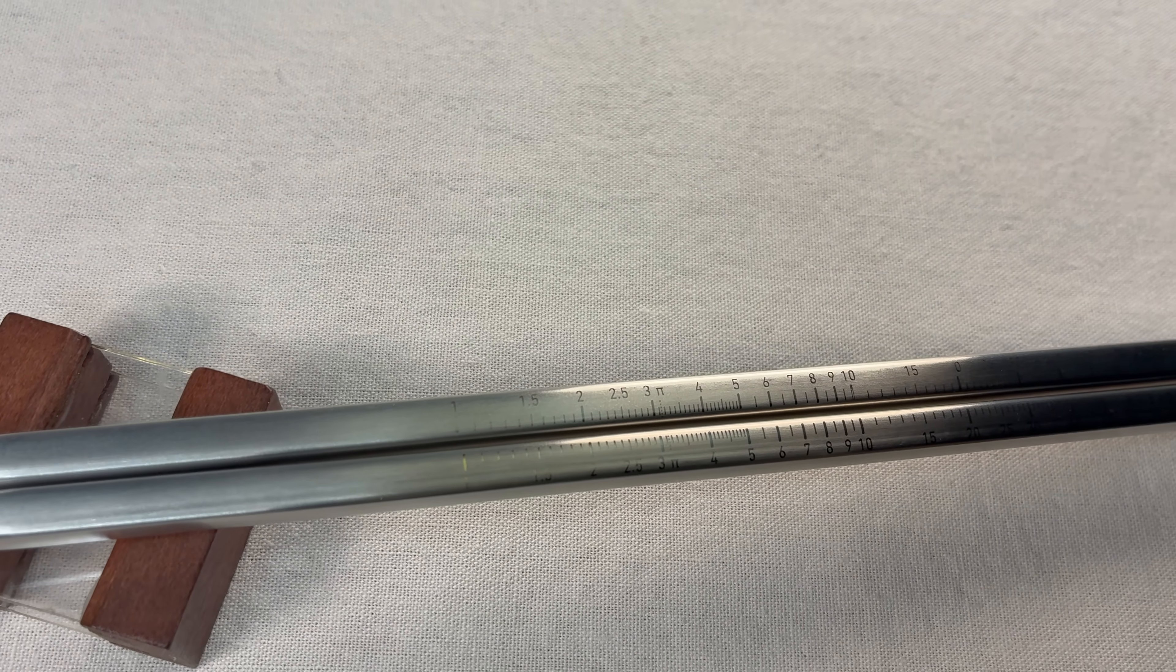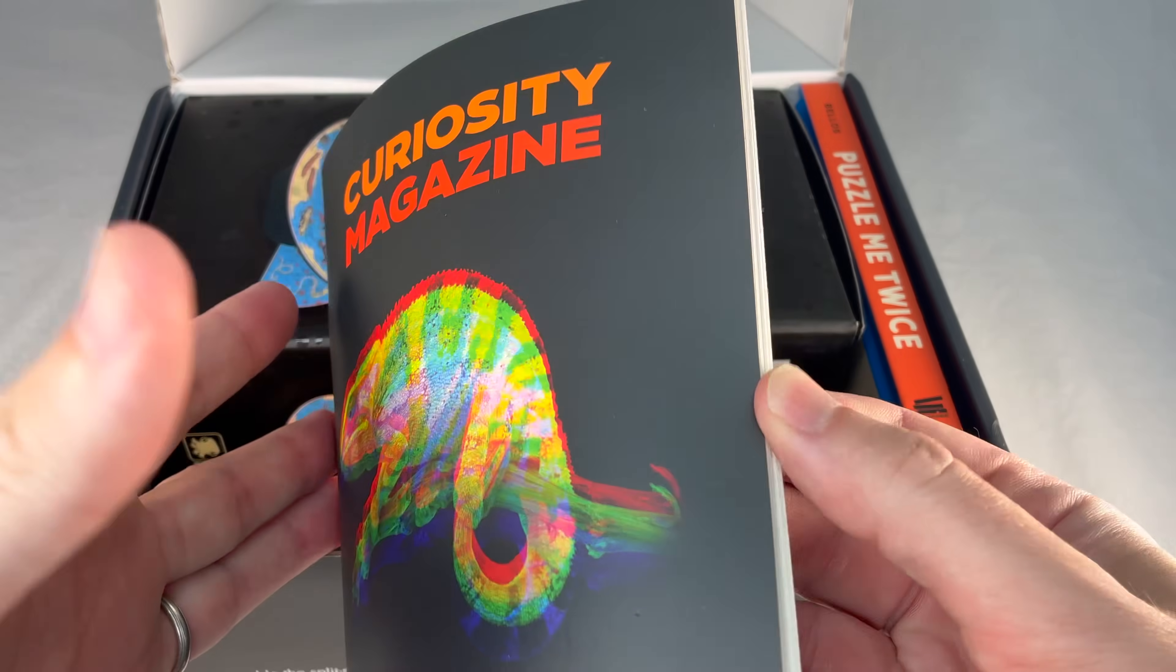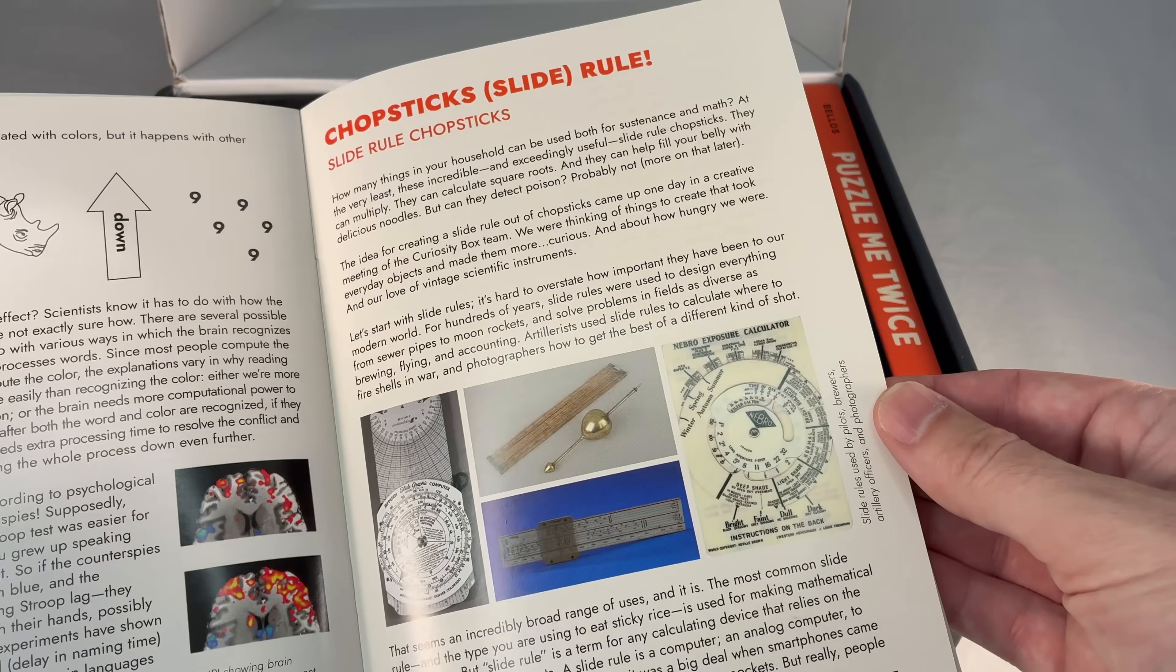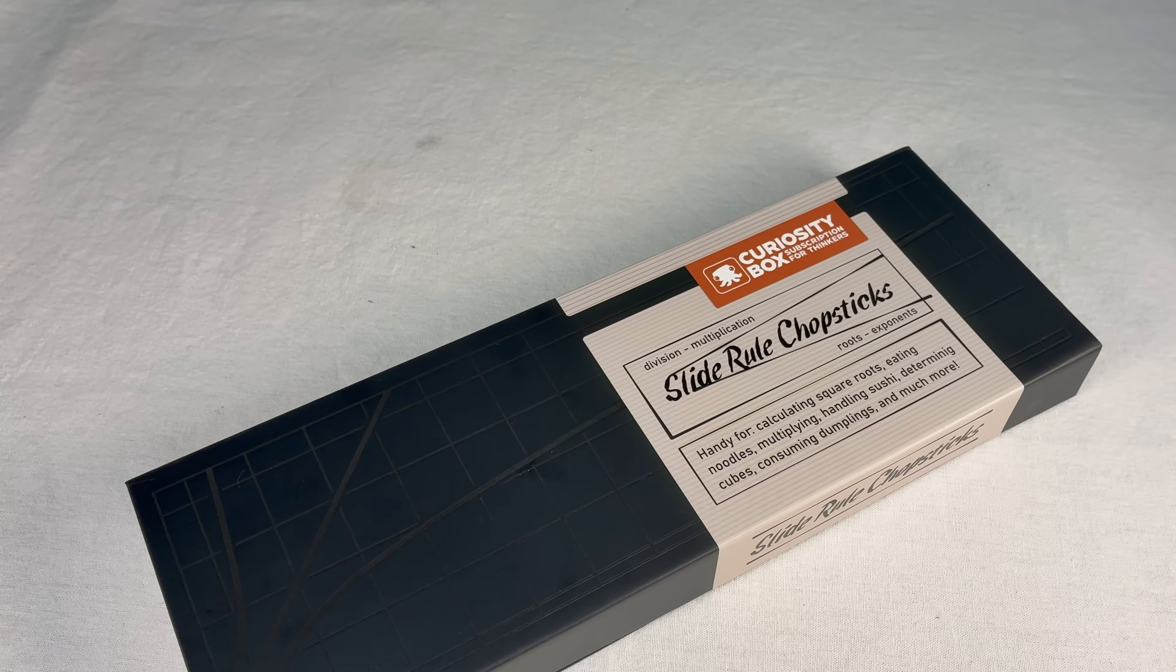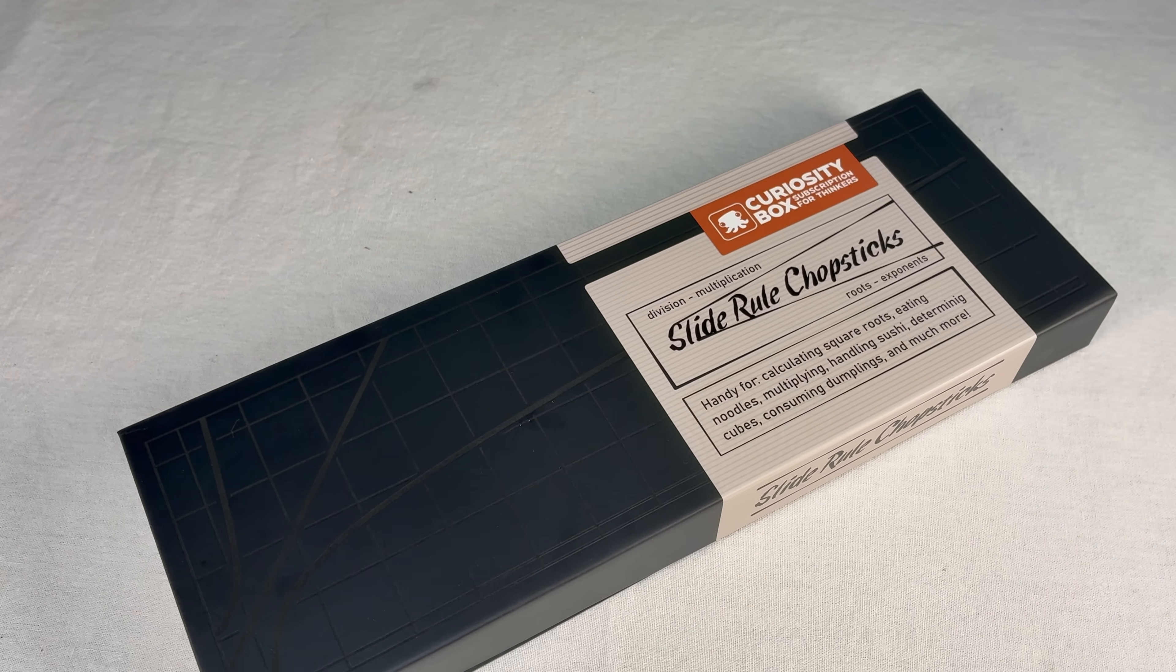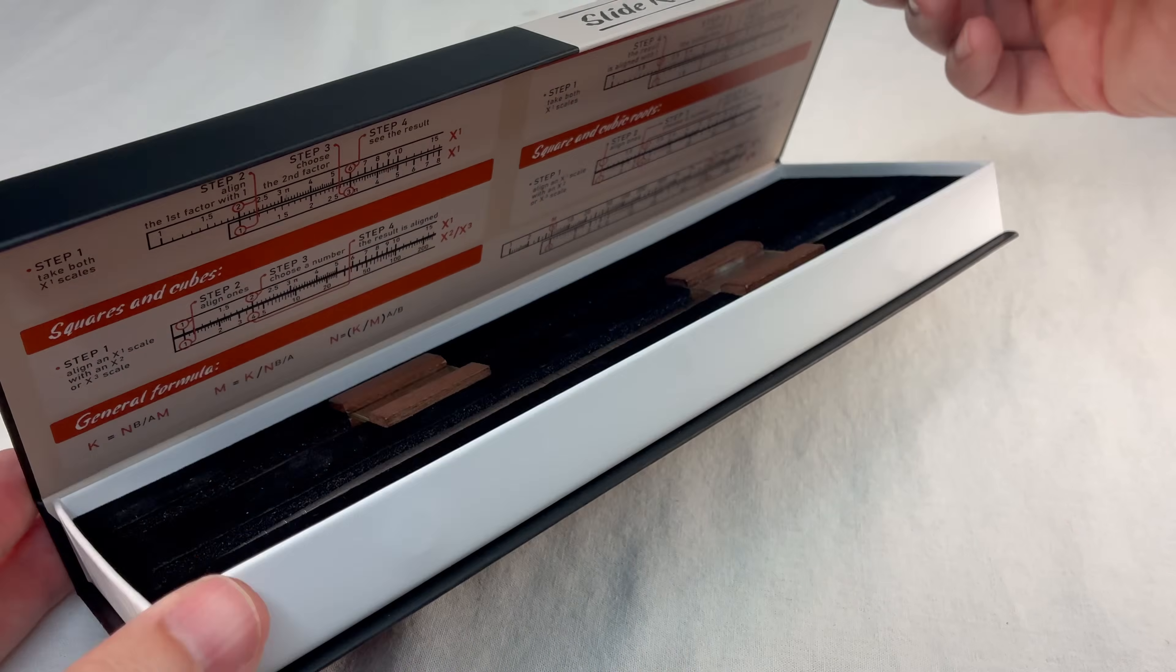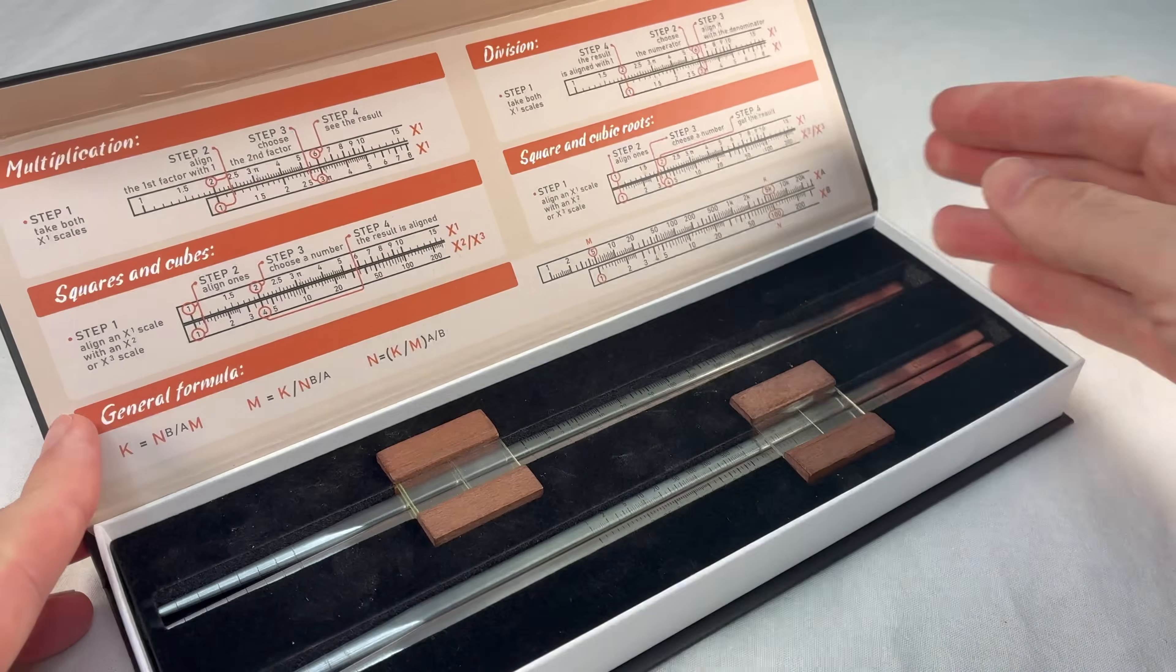The little magazine here that comes in the box has some nice history about the slide rule and about chopsticks and some instructions in there. The original box is very nice. It's got a magnetic flap on the side and two little homes for them to sit in.